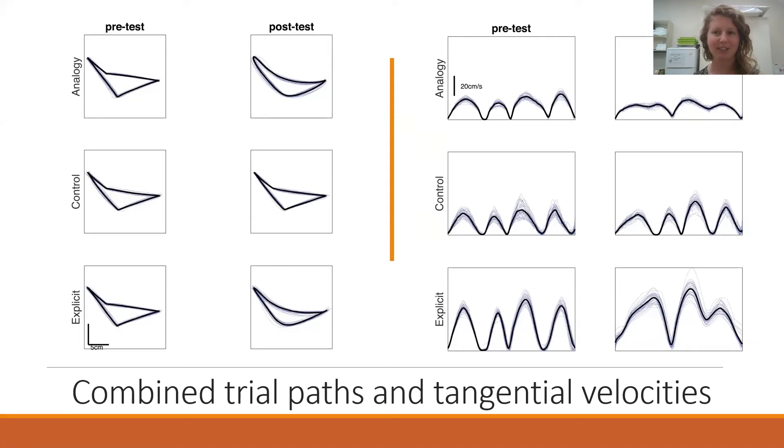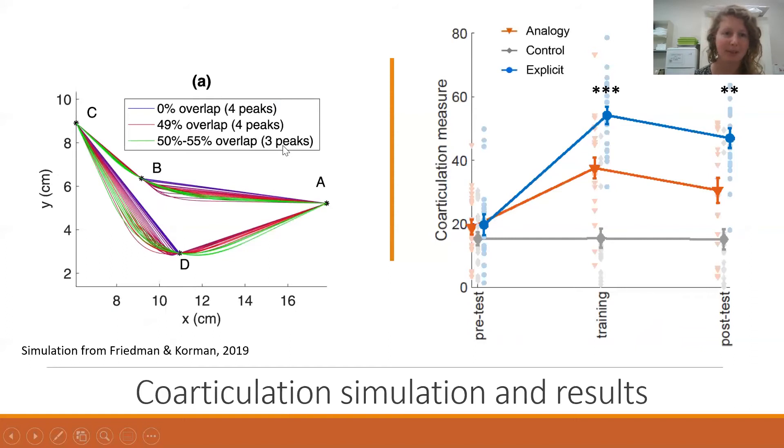Then looking at the analogy group, we actually saw that they did co-articulate and they started to connect the two movements, let's say from A to B and from B to C. You see that this line is kind of one curved line instead of two lines with an angle. And the velocity profile kind of mirrors this result. So we see that they didn't go down to zero. They didn't completely stop at point B and D, but actually this person co-articulated his velocities, velocity profiles overlap. And not very surprisingly, this was actually also what we saw in the explicit group. They also showed co-articulation and curved lines and overlapping velocity profiles. So hopefully this is understandable or clear.